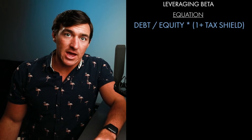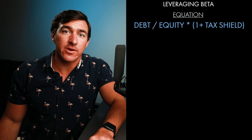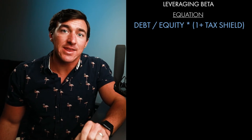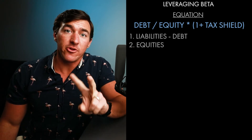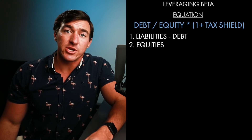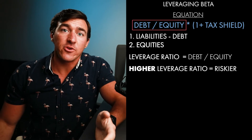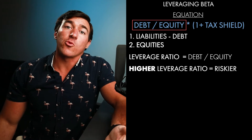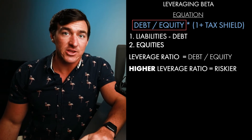The equation to do this is a little bit convoluted, but it's not terribly bad once you understand what's going on. The equation to leverage beta is: debt divided by equity, times one plus what's called the tax shield. We'll get into debt, equity, and tax shield in just a second. First, let's tackle debt and equity — remember the two different ways to pay for anything according to the balance sheet: liabilities and equity. The ratio of total liabilities to total equity is the leverage ratio. Higher liabilities relative to equity means you're riskier.